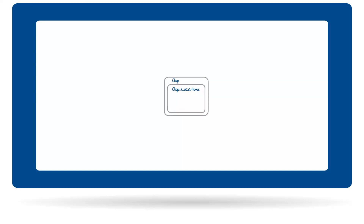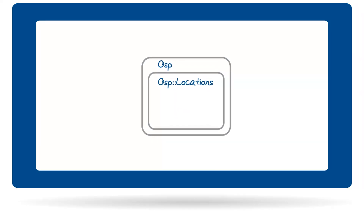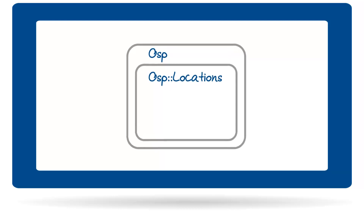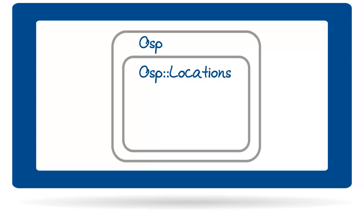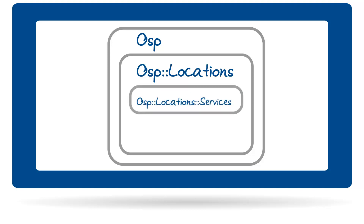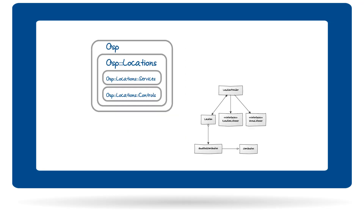The Bada libraries are logically subdivided into functional groups called namespaces. In this video we will introduce three namespaces: OSP Locations, OSP Locations Services, and OSP Locations Controls. Each namespace includes several classes which are related to each other in various forms.